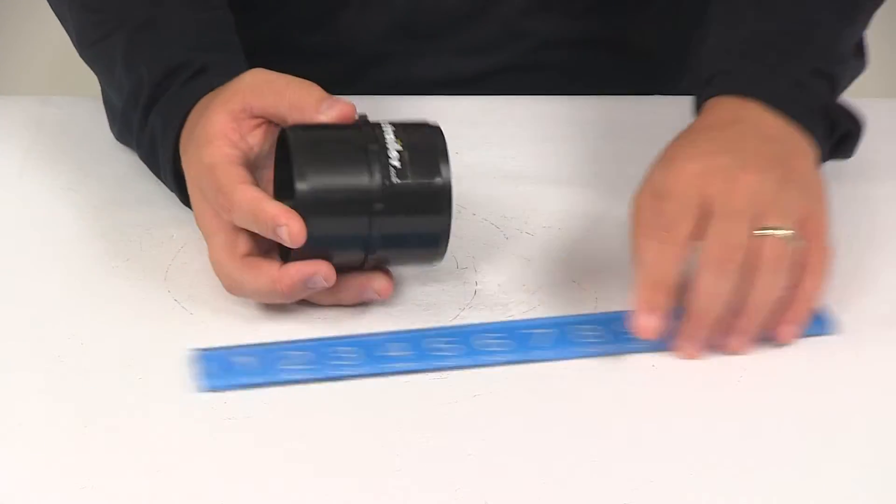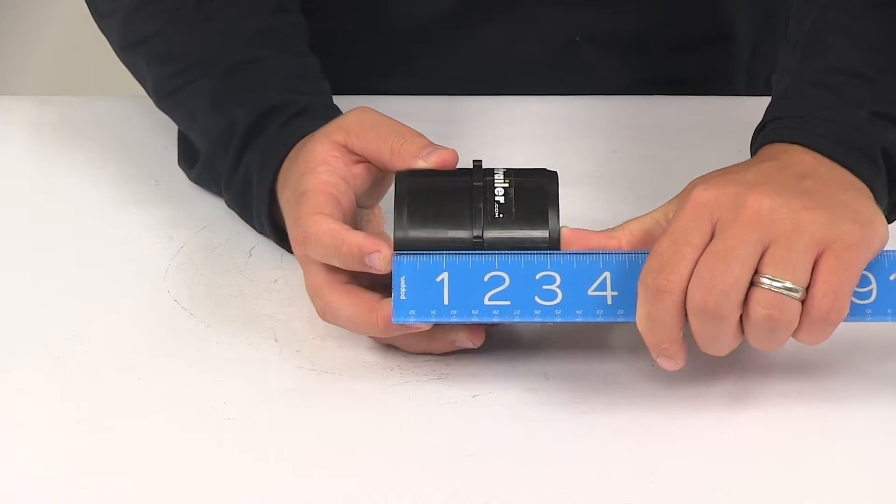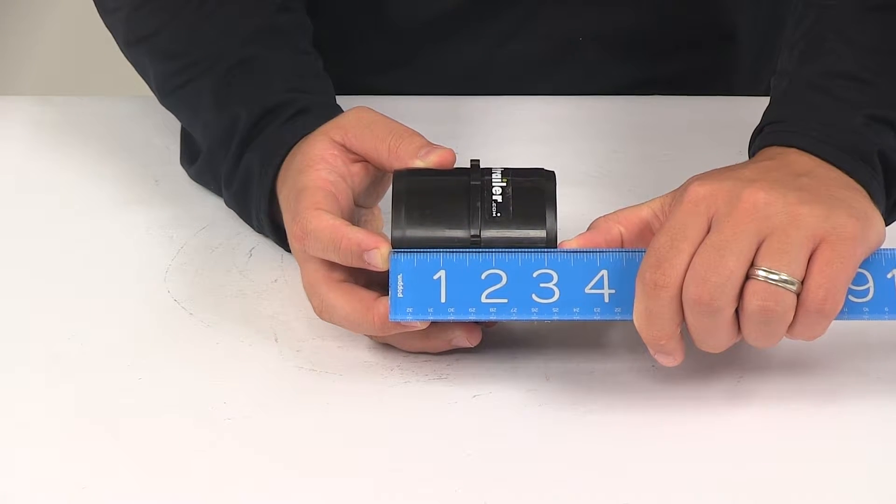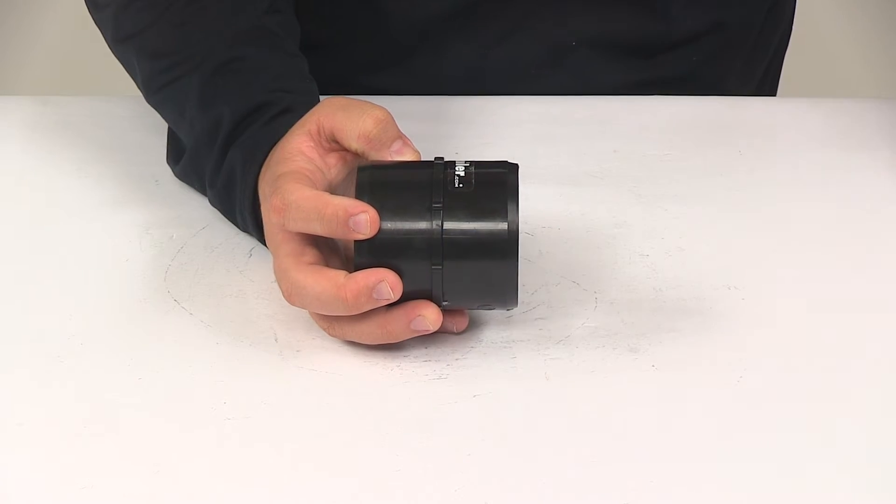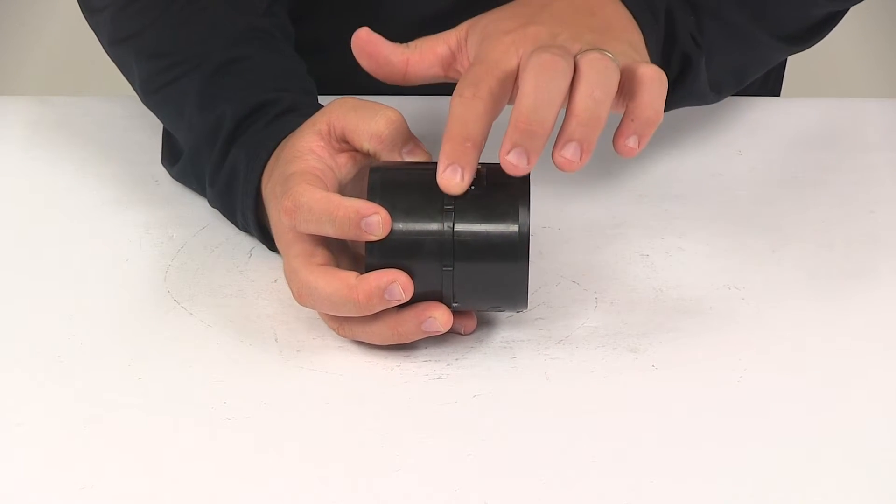Taking a look at the overall length, measuring from edge to edge, that's going to give us a measurement of about three and one quarter of an inch. Each slip end is going to measure about an inch and a half and then you're going to have that quarter inch gap in between them.